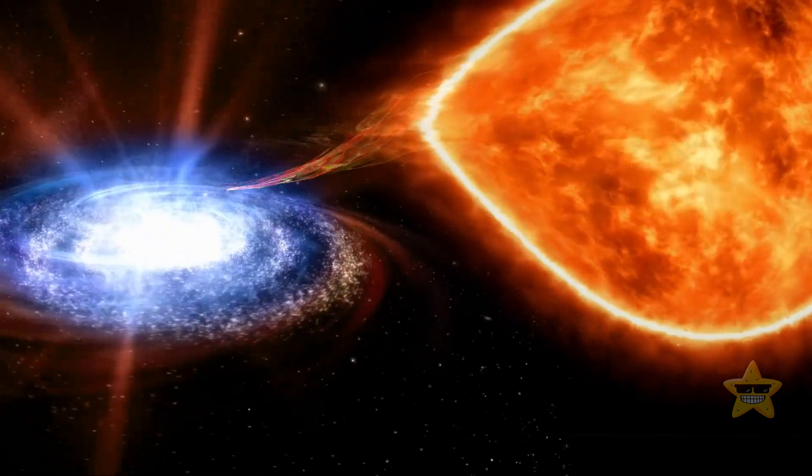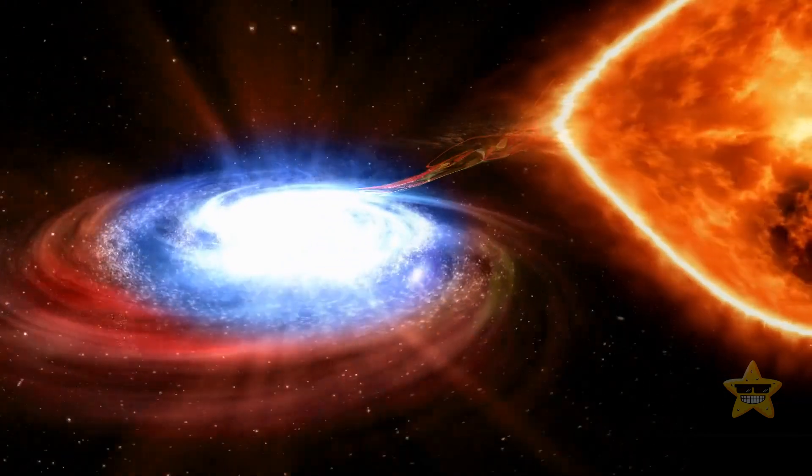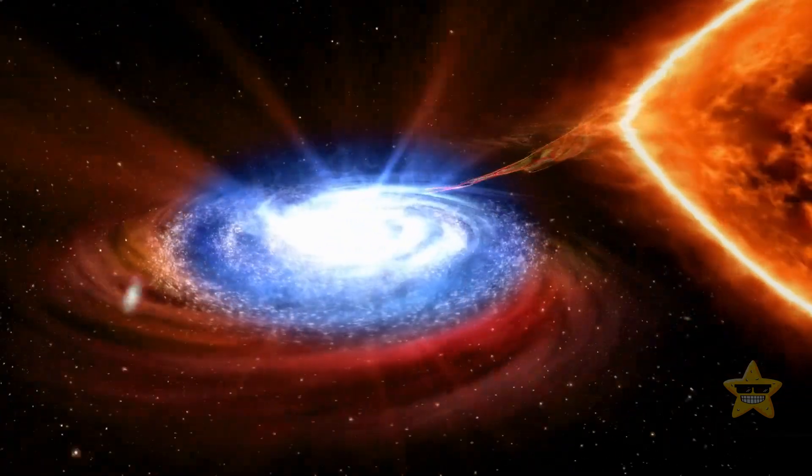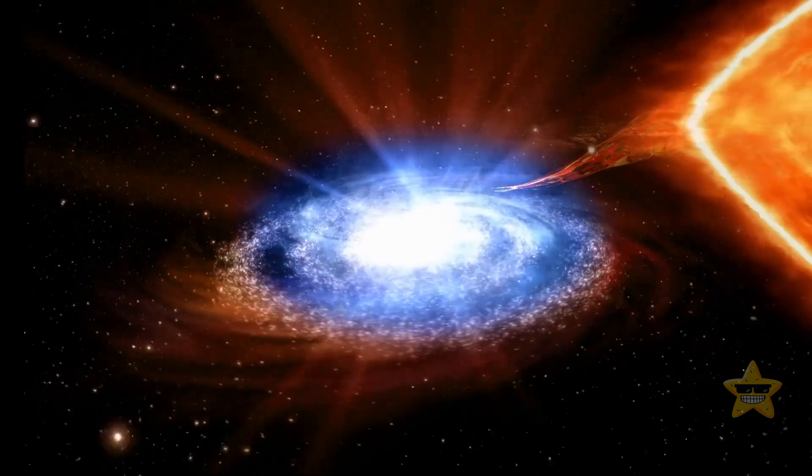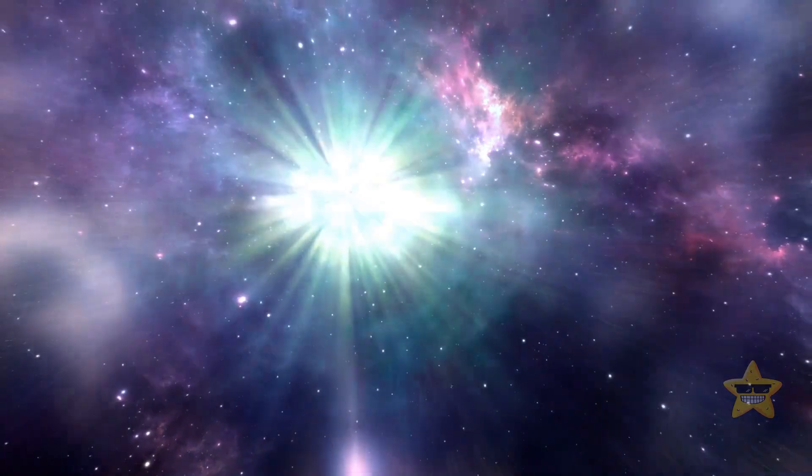Binary star systems are type 1a supernova. Explosions occur when the matter from one star is pulled away into the other, usually a white dwarf. Eventually, the white dwarf explodes, producing a supernova of epic proportions.